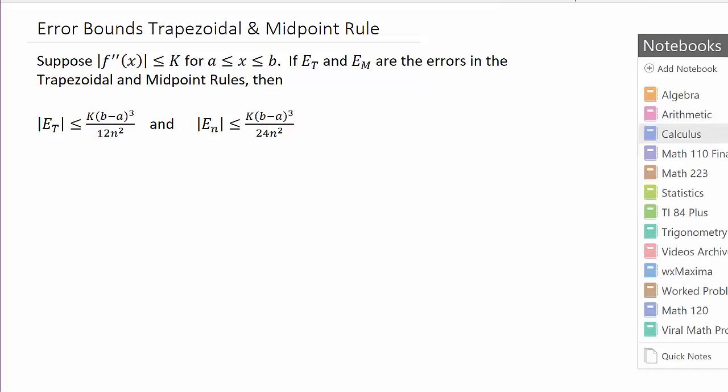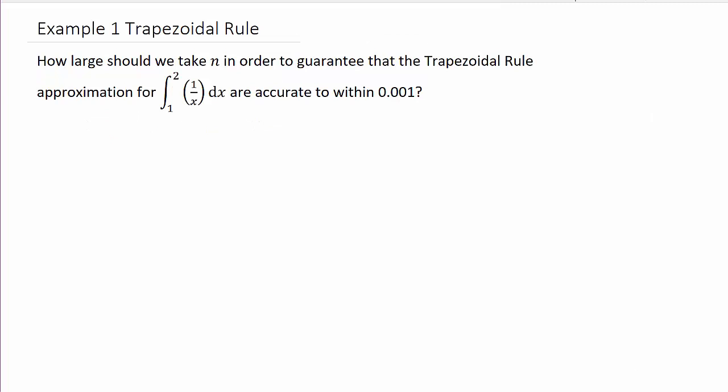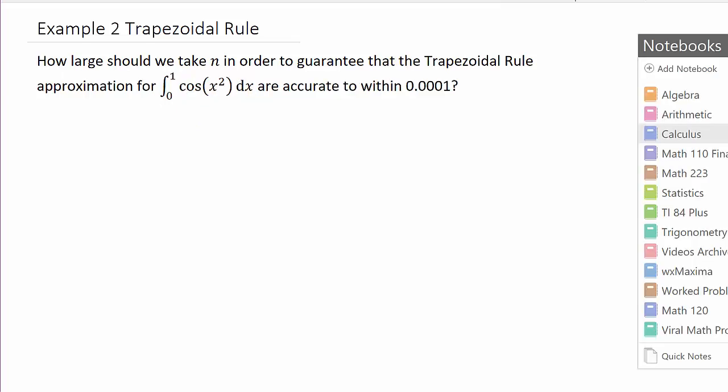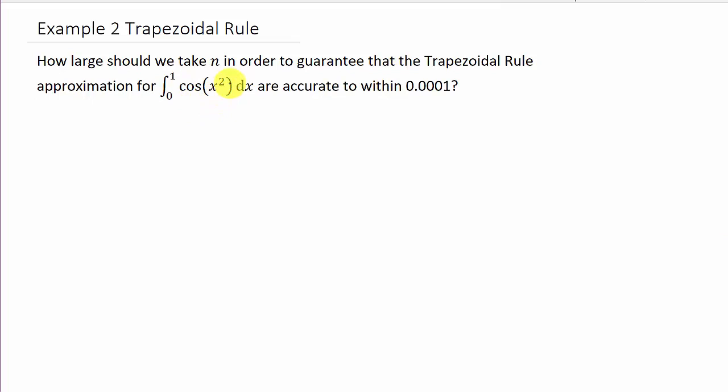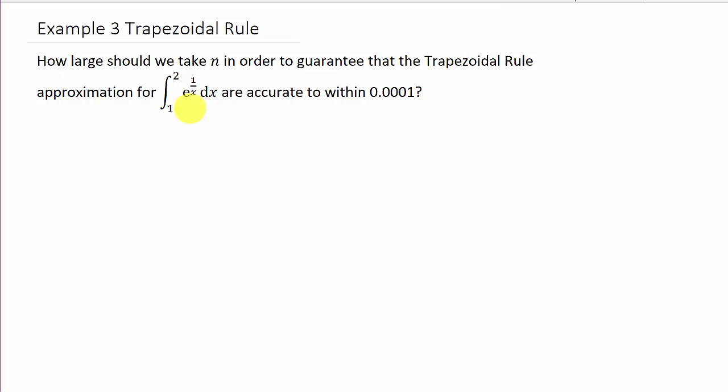So, I've got three examples to work. Each example is going to have its own video. This will be example one, so this will be the first video. The second video will have cosine x squared, and in the third video, which will be example three, we'll have e raised to the one over x. Okay, so let's go ahead and look at the examples.